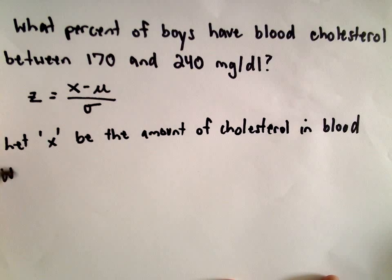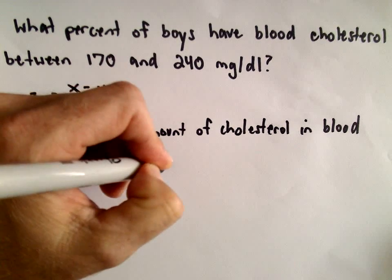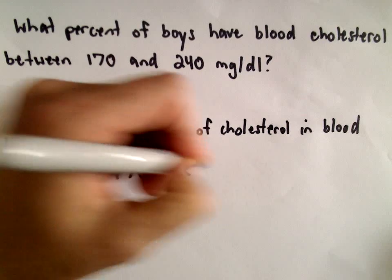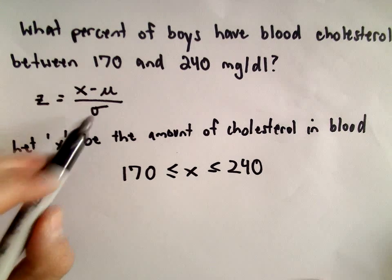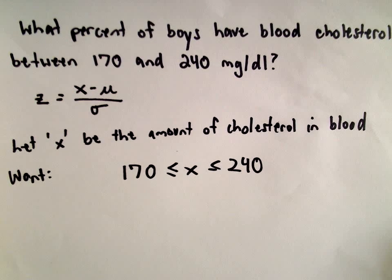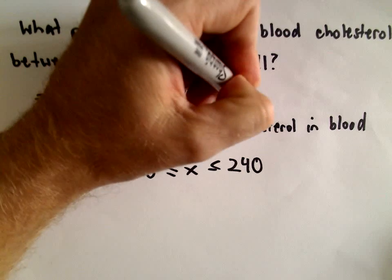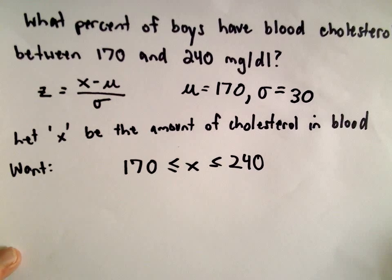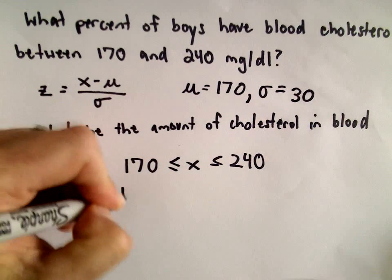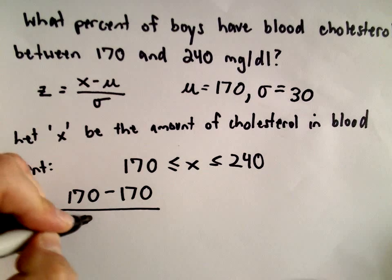We want to find what percentage of boys satisfy x between 170 and 240. We're simply going to subtract the mean and divide by sigma. The mean was 170 and the standard deviation was 30, so from every one of these values we subtract 170 and divide by 30.